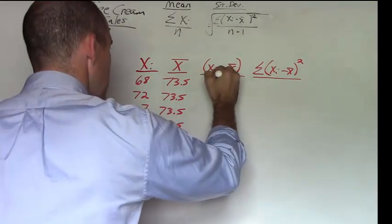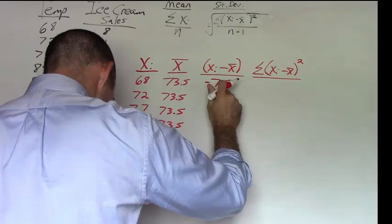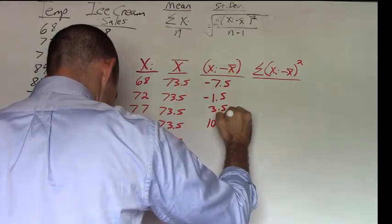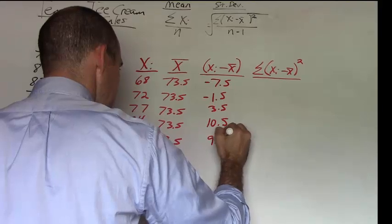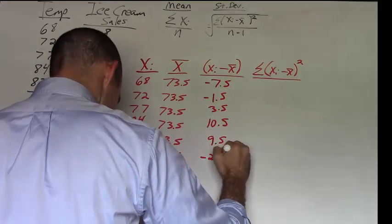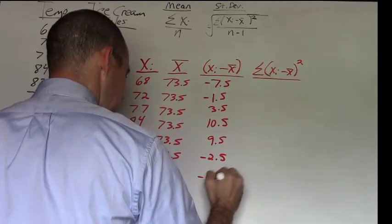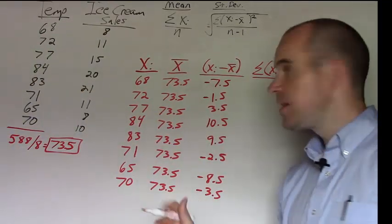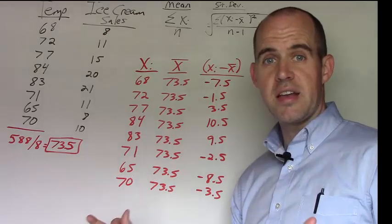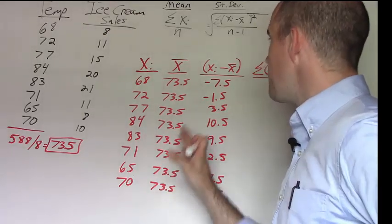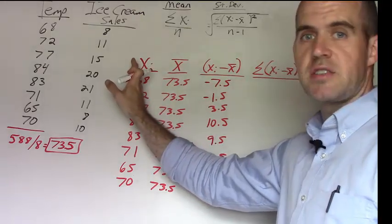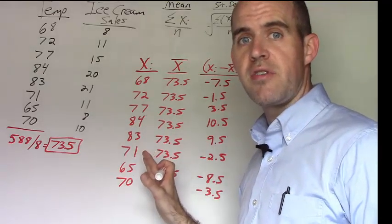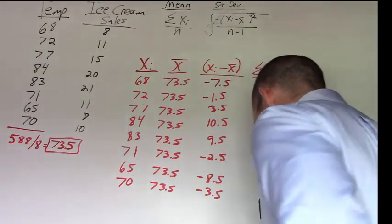So let's look at these differences. This is a difference of negative 7.5, negative 1.5, positive 3.5, 10.5, 9.5, negative 2.5, negative 8.5, and negative 3.5. Now, we don't want to make the mistake and sum this because we'll always get zero. And we'll always get zero because think about what we're doing. We're summing the difference between an x value and its mean. Rather, we want to square these values to make them all positive and then we want to sum that.